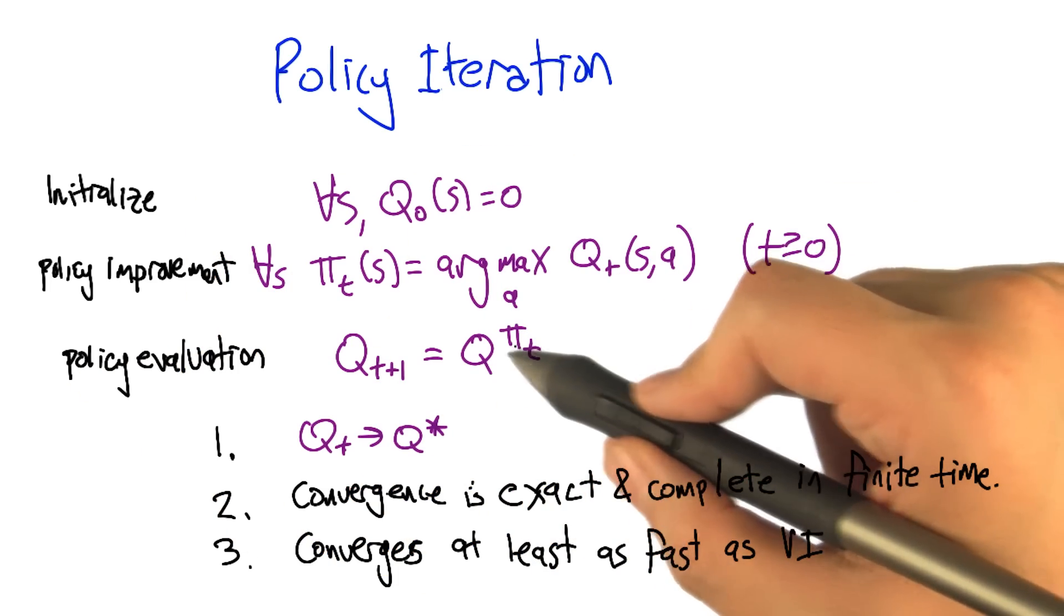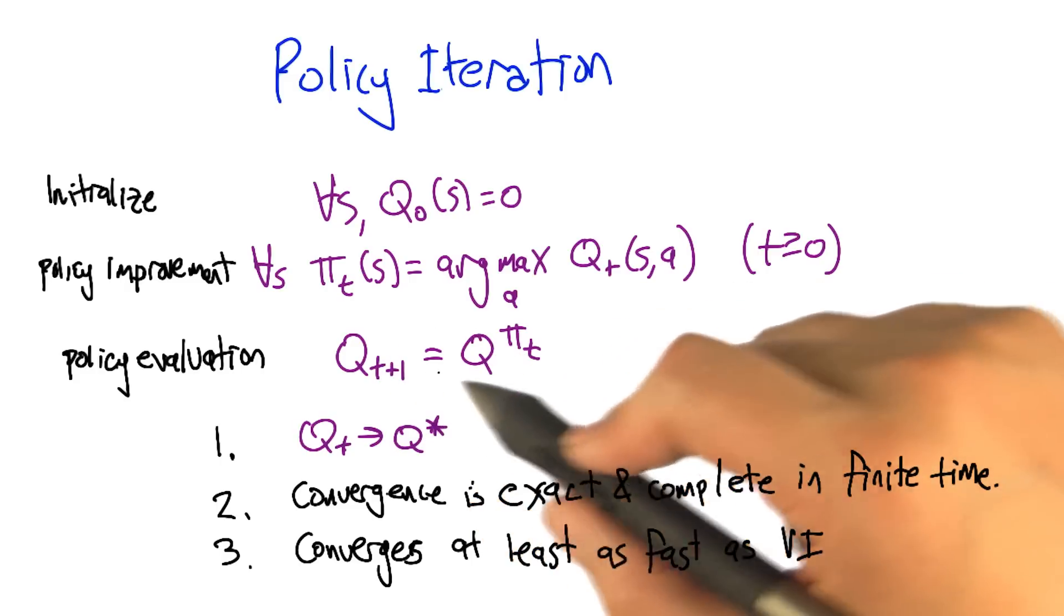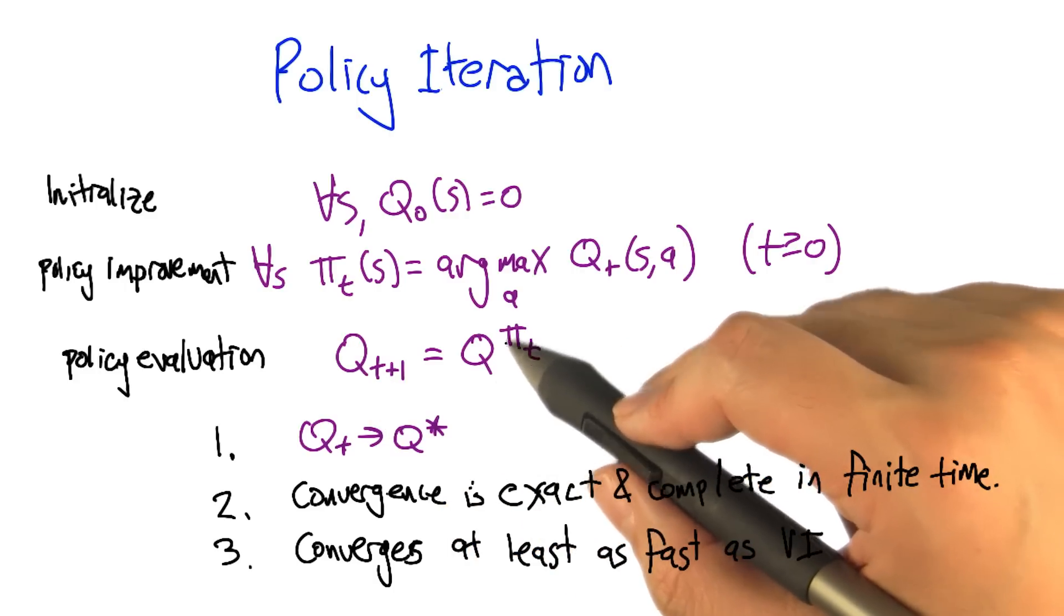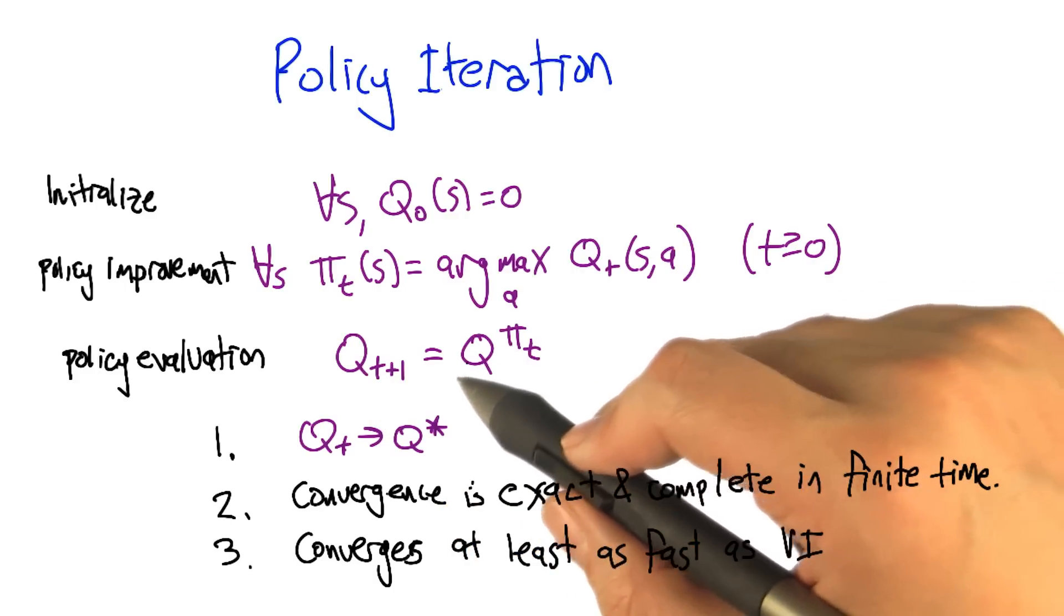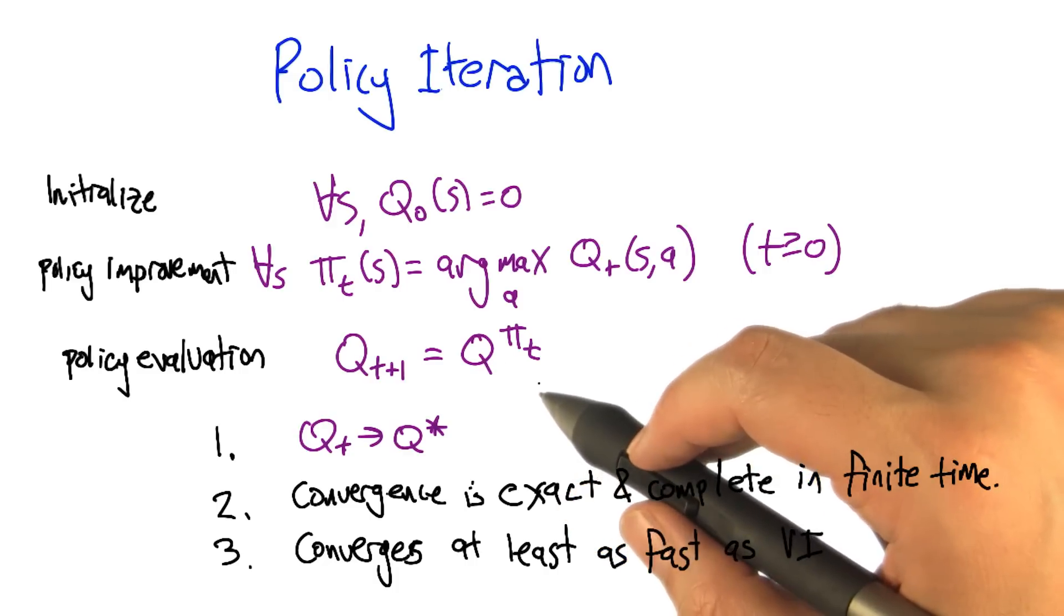you can do that by, say, solving a system of linear equations or, perhaps more commonly, by running something kind of like value iteration to completion. So in the inner loop of policy iteration is something that's an awful lot like value iteration.